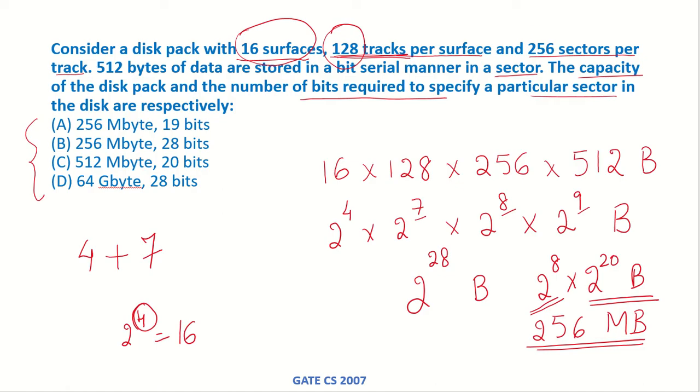Then there are 256 sectors per track. So once we know the track then 8 bits more will be required to identify the sector. So if we add this up this is 7 plus 4 is 11 plus 8, 19 bits will be required to go to a particular sector.